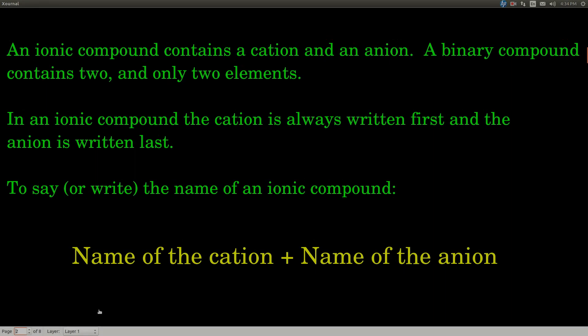What is a binary ionic compound? Ionic means that it contains a cation and an anion. A binary compound contains two and only two elements. So a binary ionic compound is a compound that has a monatomic cation and a monatomic anion. When you write an ionic compound, the cation always goes first on the left and the anion always goes last on the right, in both the name and the formula.